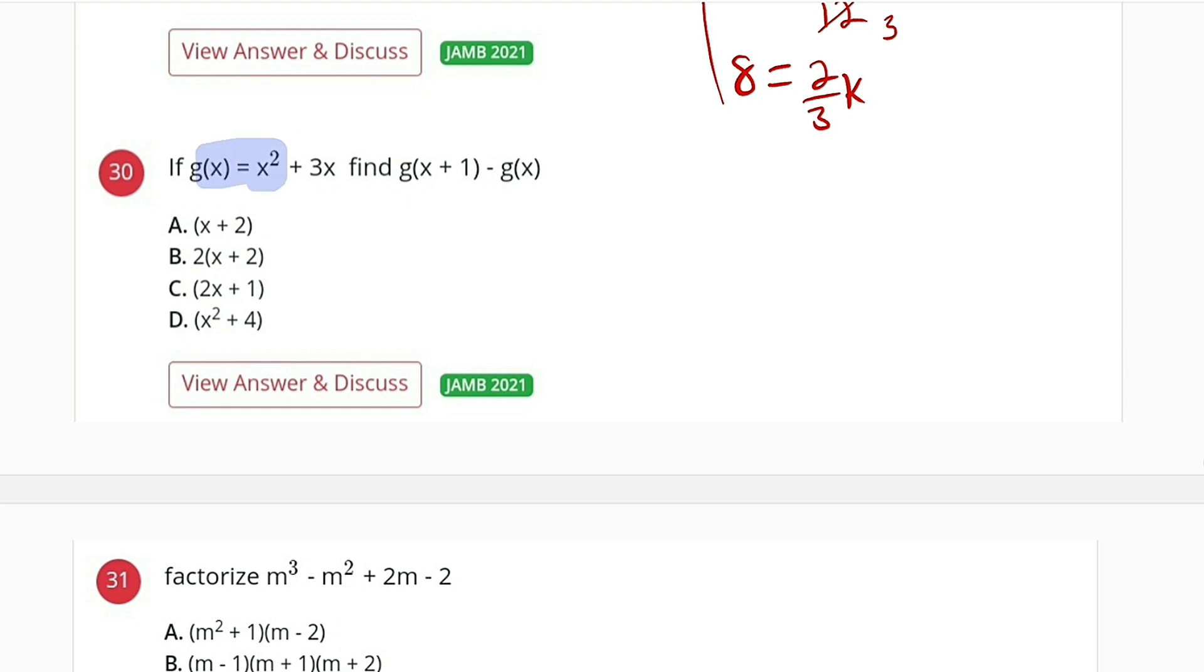Already g of x is given. All we have to do is substitute the value of x with x plus 1. So we have, wherever we have x, we replace it with x plus 1.